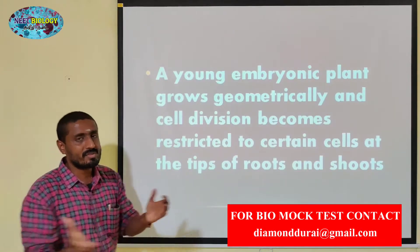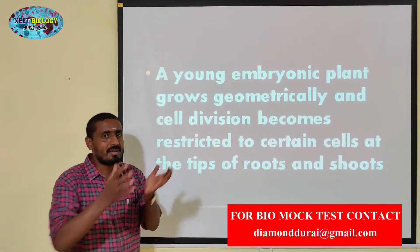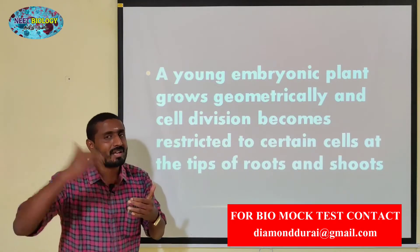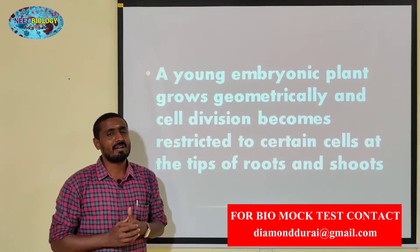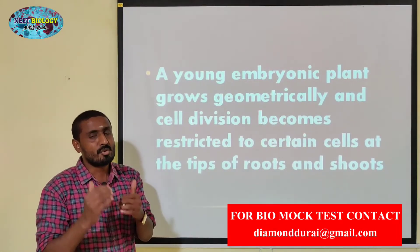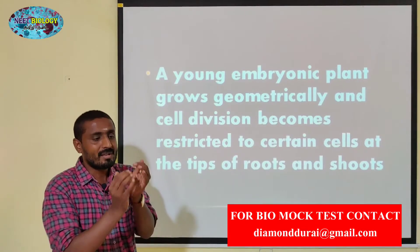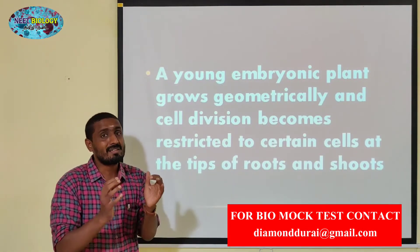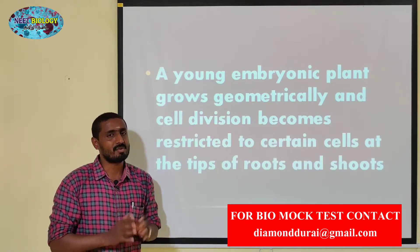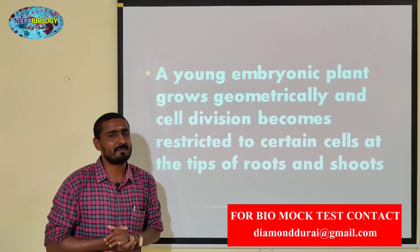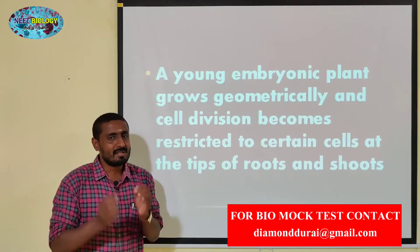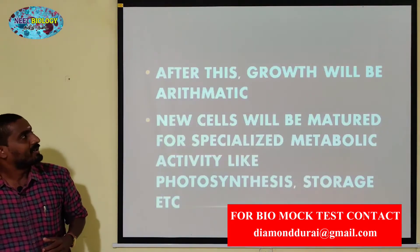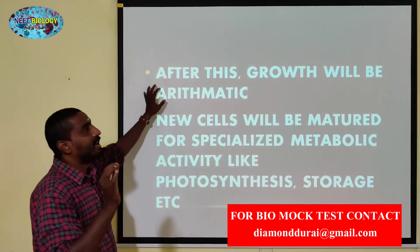That is the root system and shoot system. In this part, the root and shoot form again. The other part is Arithmetic Growth — what is the part of the plant? If you have any questions about the plant, the growth will be arithmetic.